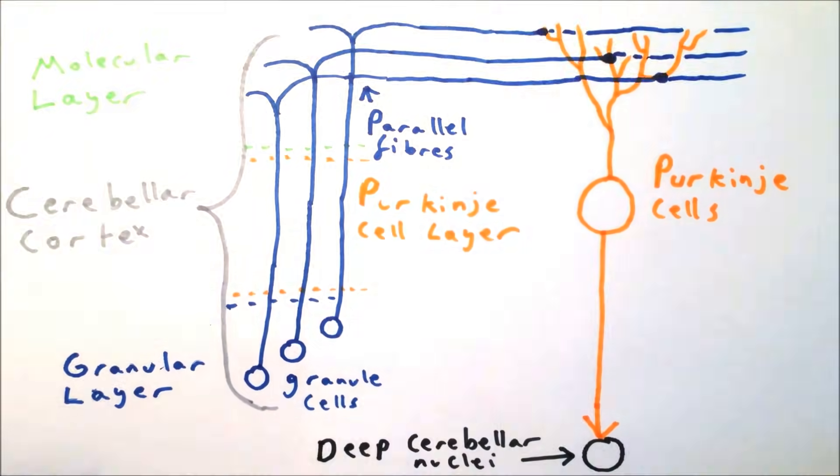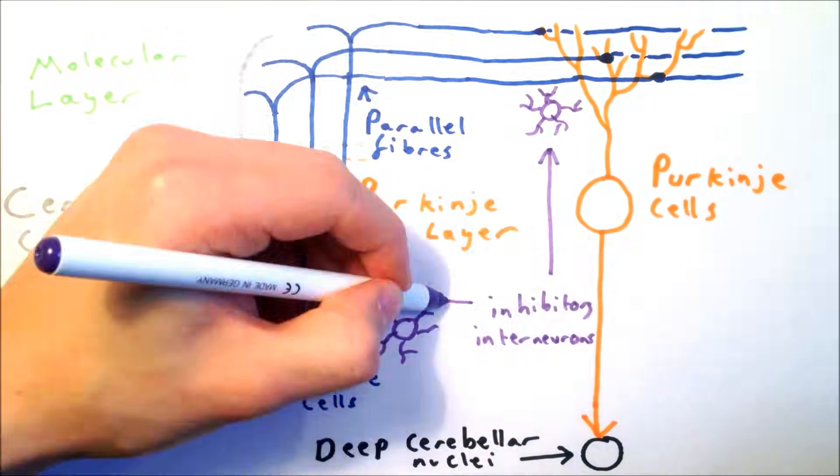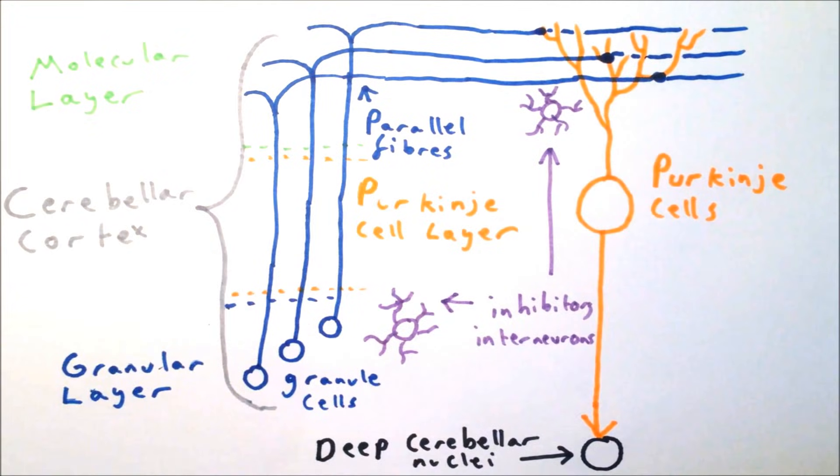These dendritic trees span out at 90 degrees to the parallel fibers and form numerous synapses with them. There are also inhibitory interneurons throughout the cerebellar cortex, which provide a level of inhibition to balance the surrounding circuit.